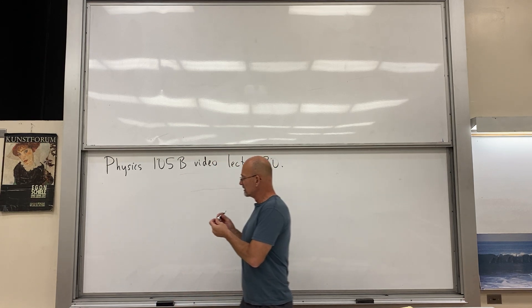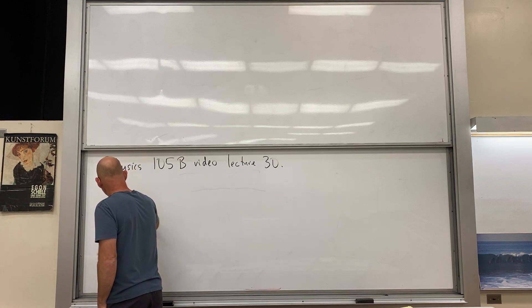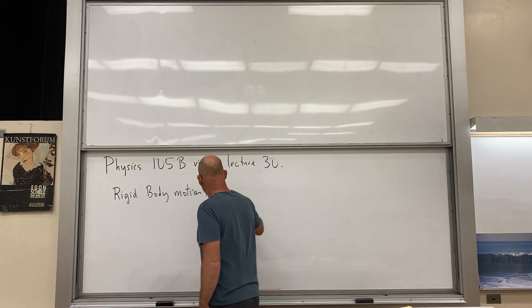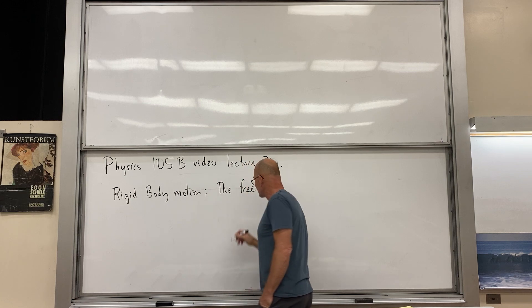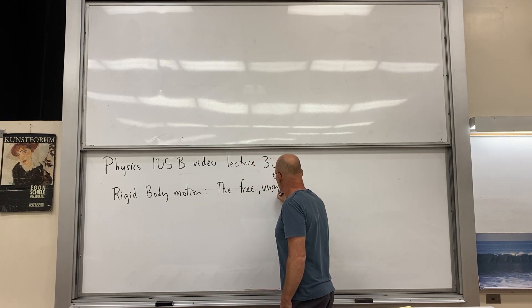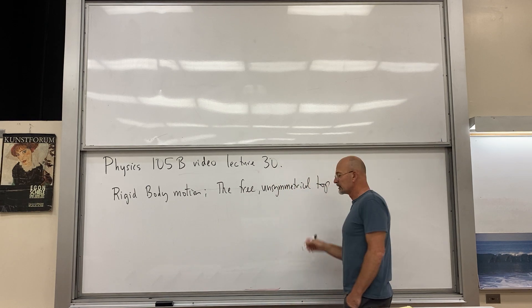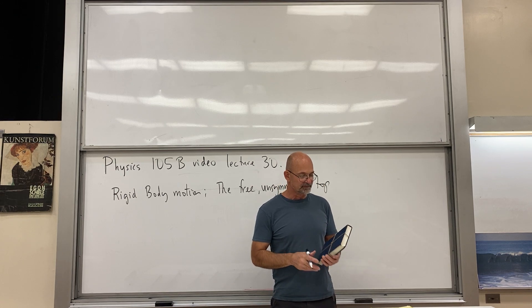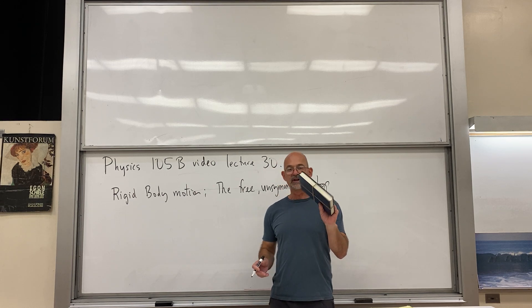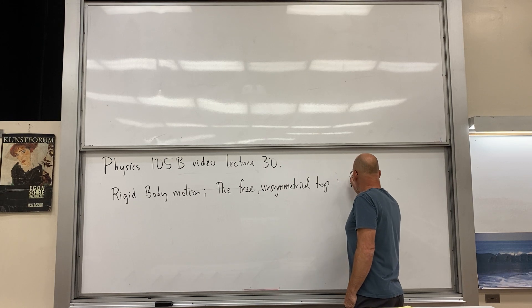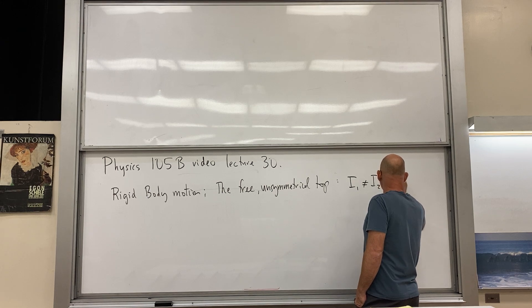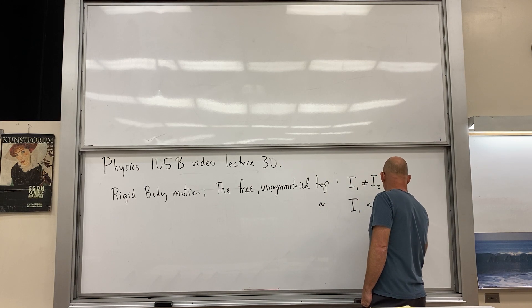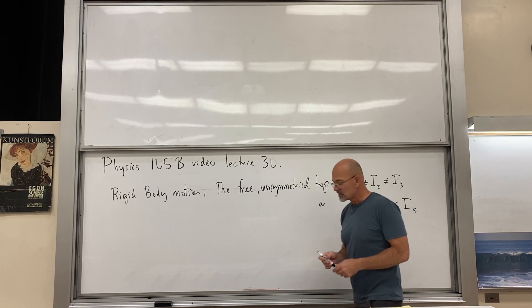We're looking at rigid body motion — the free unsymmetrical top, so it's going to be force-free. The book is the perfect example — we called this the box when we integrated up the moment of inertia. What we mean is that i1 is not equal to i2, not equal to i3, and without any loss of generality, we say i1 less than i2 less than i3.